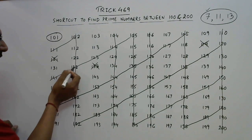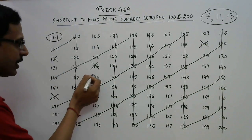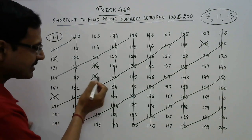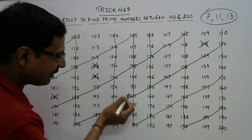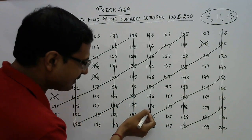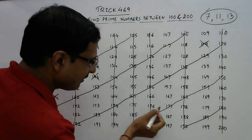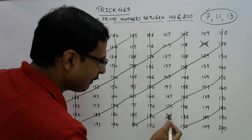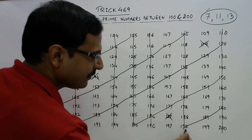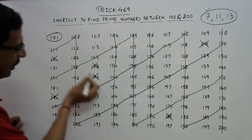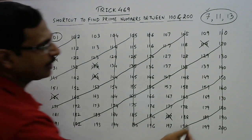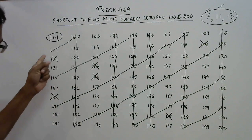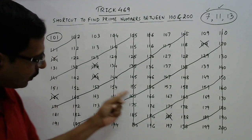121 plus 11 is 132; 132 plus 11 is 143; 143 plus 11 is 154; 154 plus 11 is 165; 165 plus 11 is 176; 176 plus 11 is 187 — strike this off also; 187 plus 11 is 198. So this diagonal of multiples of 11 is struck off. You can also strike them off directly by drawing the diagonal.